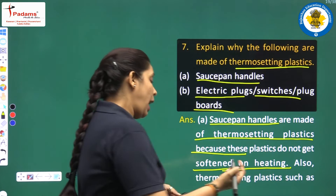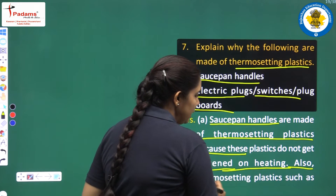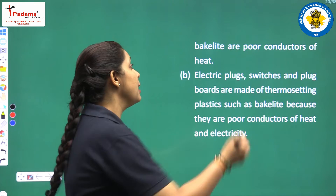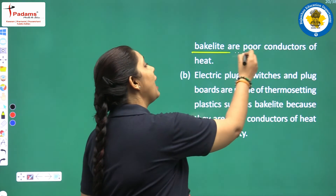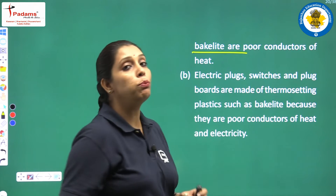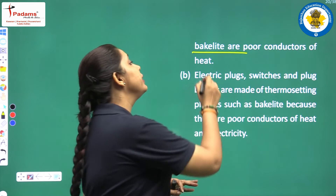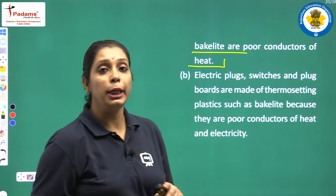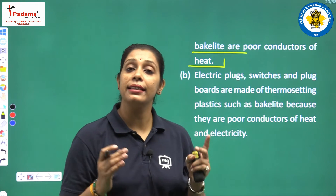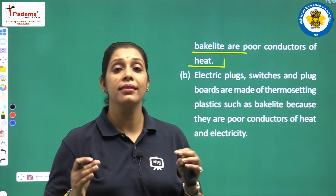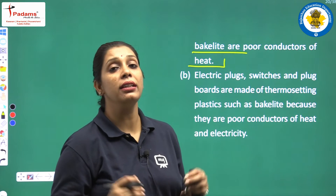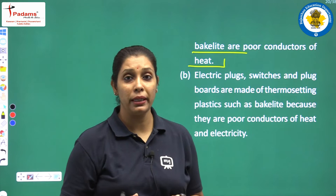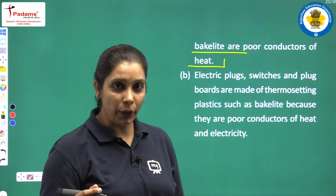Thermosetting plastic such as bakelite is a poor conductor of heat. That is the main reason why we make the handles of saucepans from bakelite.